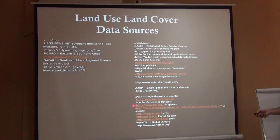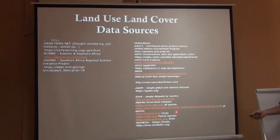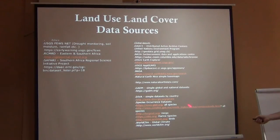Species occurrence data sets — here's GBIF, and there are a lot of other ones specific for herpetology or for ornithology. If you want to show where certain species are located on the map, you can use these data sets.